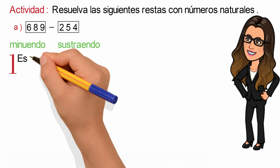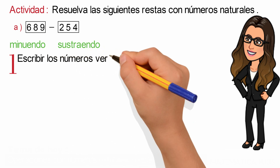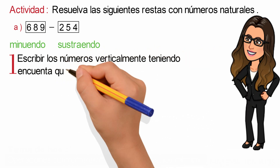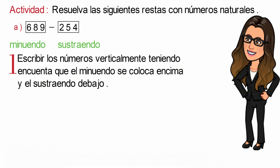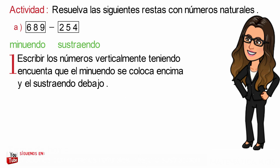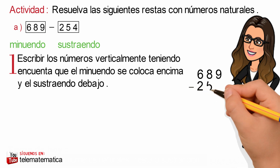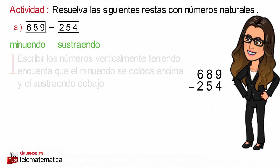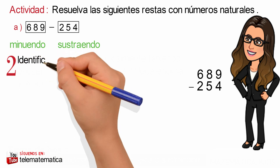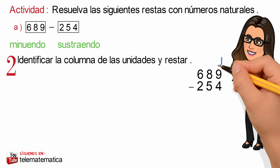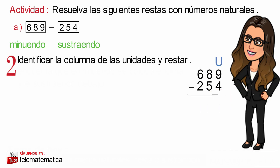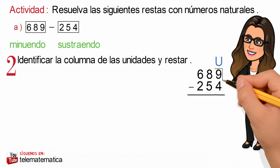A continuación recordaremos el procedimiento para restar números naturales con tres cifras. En primer lugar, escribir los números verticalmente, teniendo en cuenta que el minuendo se coloca encima y el sustraendo debajo. Luego identificamos la columna de las unidades y restamos: 9 menos 4 es igual a 5.